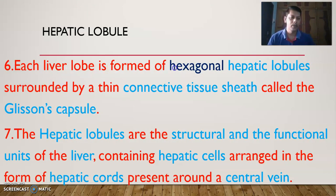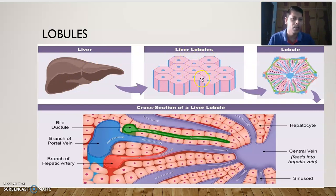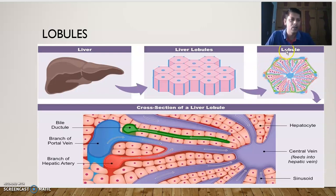Each liver lobe is formed by hexagonal hepatic lobules. You can observe in this figure — the liver has a right lobe and a left lobe, and if you take a section of any lobe, you find hexagonal structures called hepatic lobules or liver lobules. Hepatic lobules are the structural and functional units of the liver.